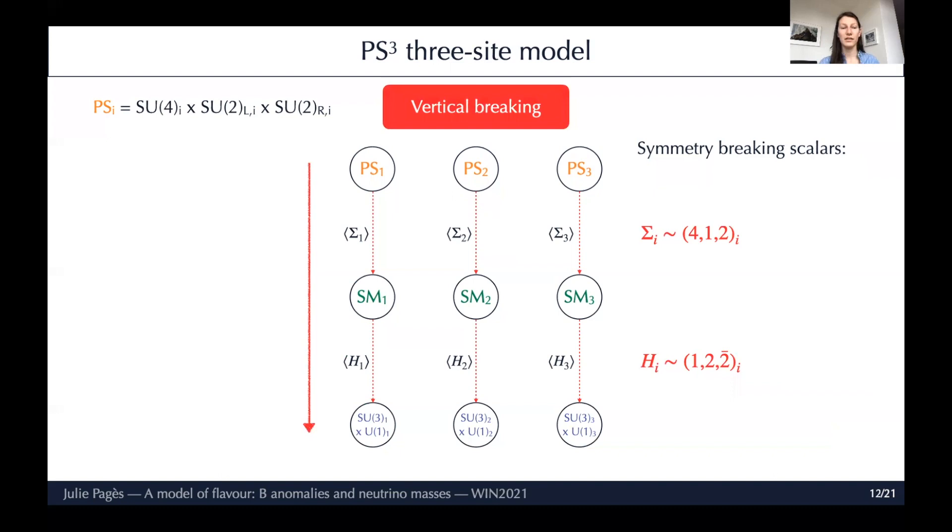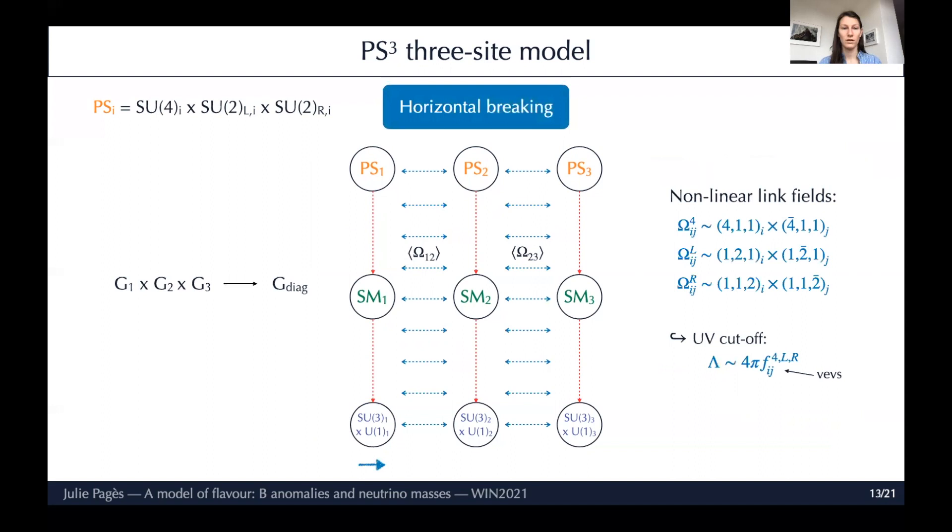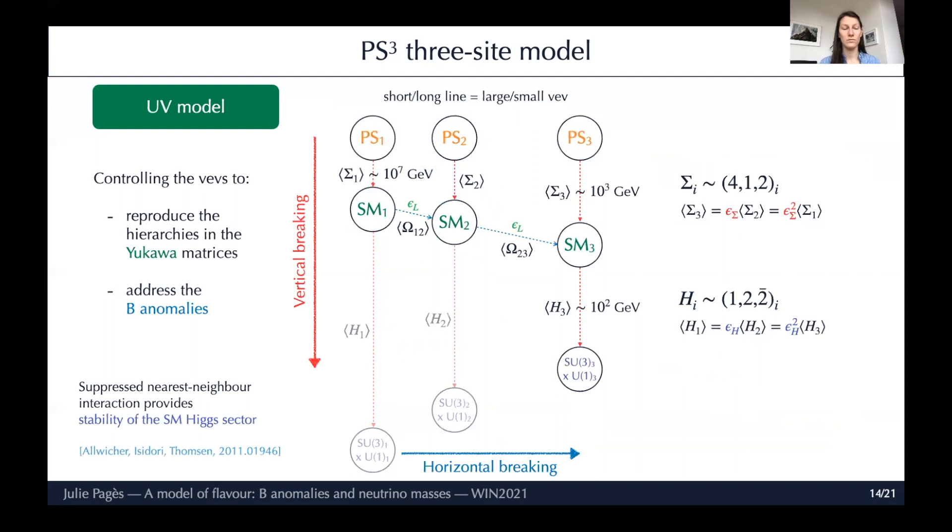In the 5D picture, the zero-mode profile of the fermions are mostly peaked at one of the sites and have an exponential tail overlapping with the other sites with a suppression factor εL. Now to understand how this changes the standard model, we have to go through a series of spontaneous symmetry breakings. First, we need to do vertical breaking from Pati-Salam to the standard model via the VEV of a new scalar Σ, and from the standard model to SU(3)×U(1) via the standard Higgs, which is in this case a bi-doublet. Then we have to do horizontal breaking in order to bring the different sites together by breaking the different groups to the diagonal subgroup. This is done by nonlinear link fields.